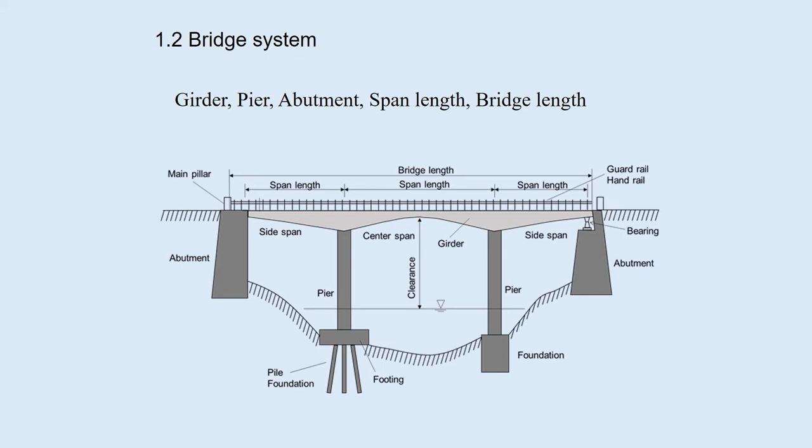1.2 Bridge System. A typical bridge system is illustrated here. Pedestrians and vehicles move on the deck, which is supported by the girder. The girder is supported at the bearings, and their reactions are transferred to the piers in the middle and the abutments at the ends, which are supported by the ground.